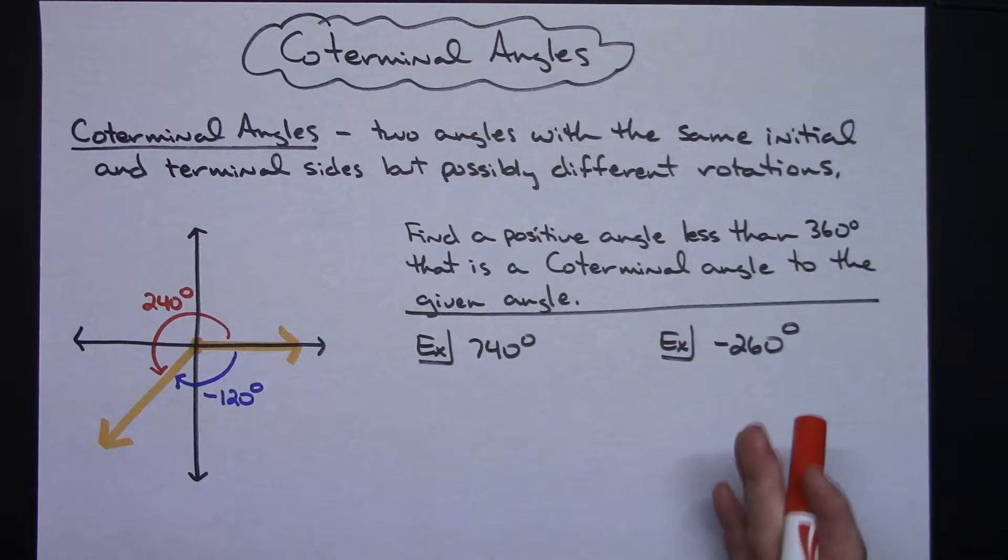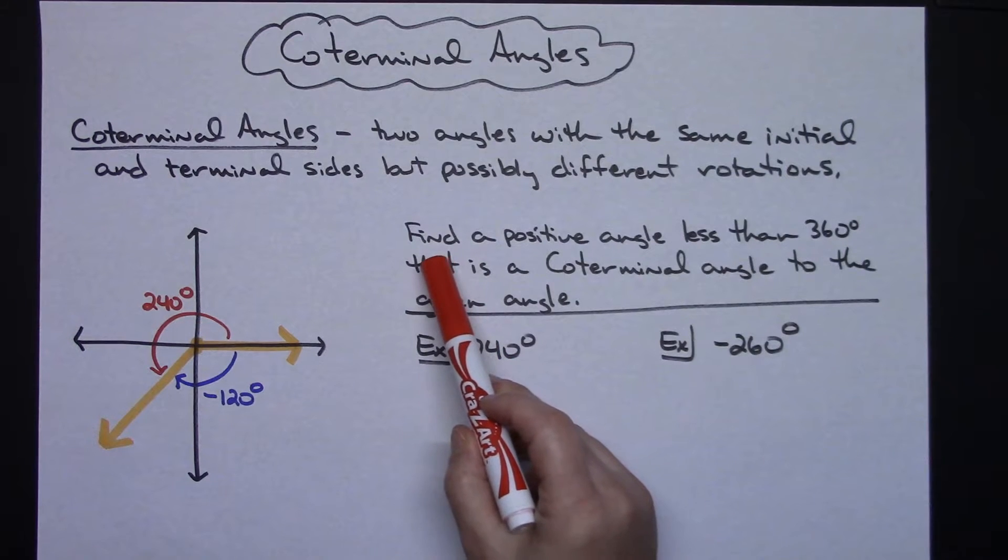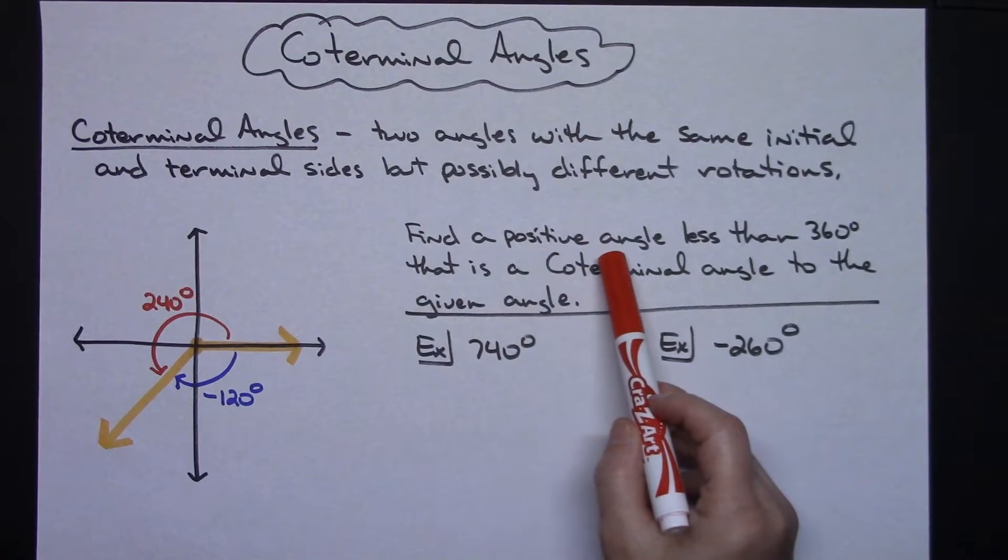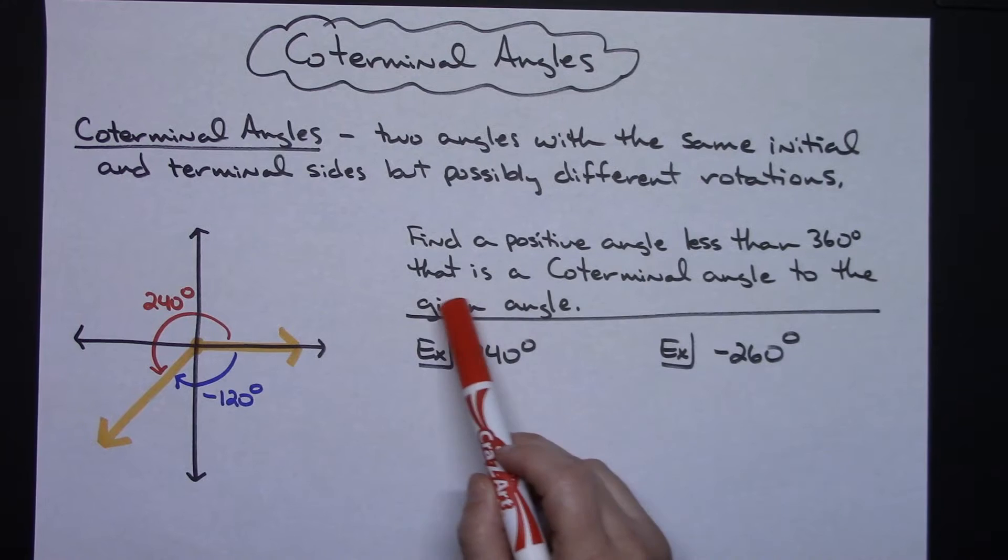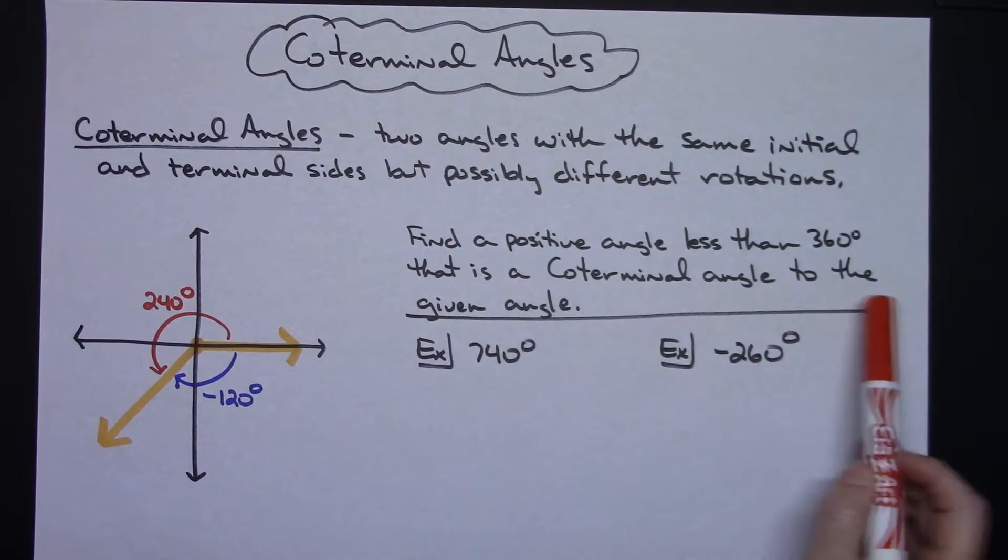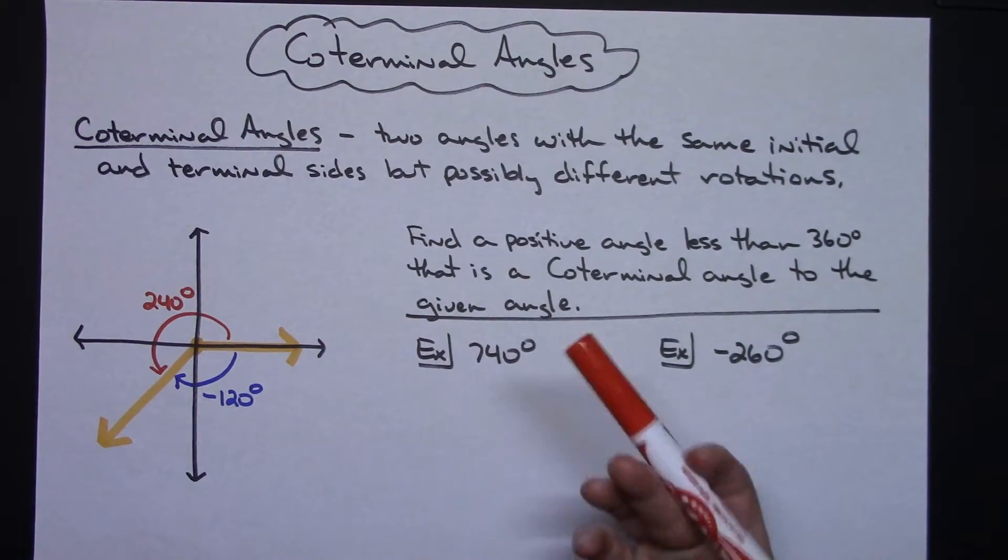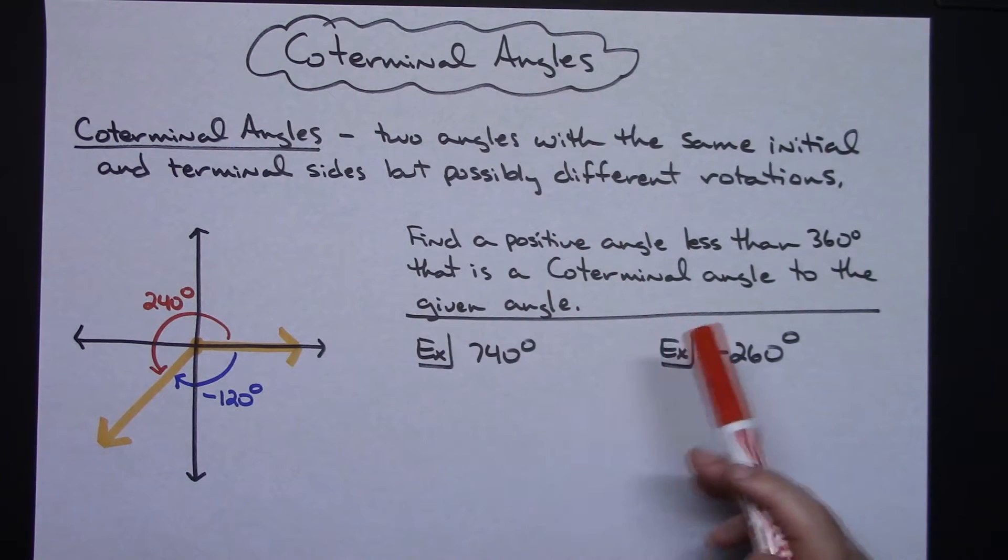Okay so a couple of examples here. Let's say that it wants you to find a positive angle less than 360 degrees that is a coterminal angle to the given angle. So they put a little additional restriction on there. They want it positive and they want it to be less than 360 degrees.